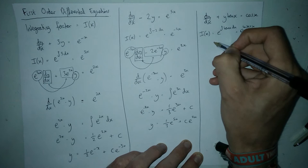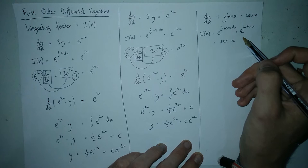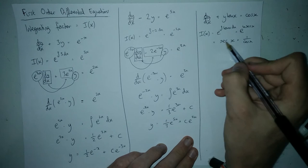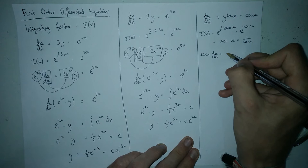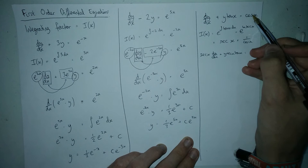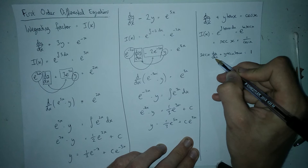The integral of tan x is ln(sec x). Now sec x is one over cos x. The key point is that e and ln are inverse functions, so e to the ln(sec x) simplifies to just sec x. So the integrating factor is sec x. We multiply the whole equation by sec x: we get sec x dy/dx, then sec x times tan x gives sec x tan x, and sec x times cos x — since sec x is one over cos x — gives one.